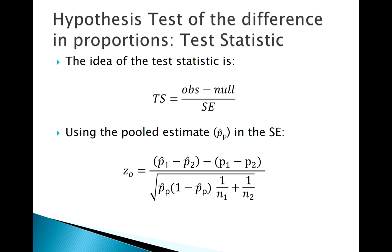We're interested in values of p1-hat minus p2-hat, and typically that null value is zero. Notice p-hat pooled appears in our standard error. If you've got a pretty good grasp of what we talked about before, this stuff should follow pretty easily. We'll see some examples of this in the future.